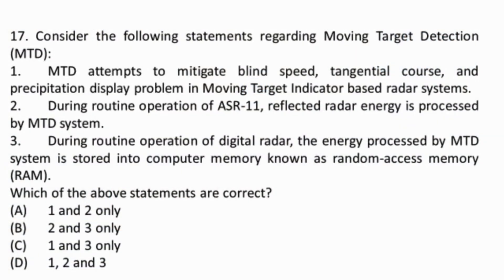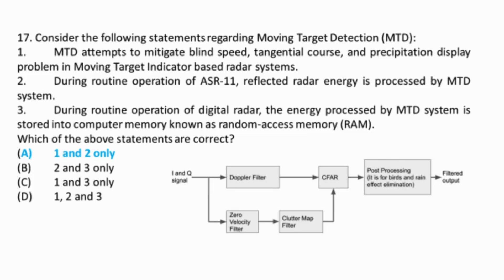Question 17: Moving target detection is important for removing clutter from the radar image. In ATC, the targets are moving, so the easiest approach is to eliminate all clutter which is static or which does not match the expected size or behavior of an aircraft. Moving target detection is an upgraded version of the moving target indication system. It is used to mitigate blind speed, tangential course, and precipitation display problems in moving target indicator-based radar systems. The ASR-11 radar has a digital moving target detection processor which uses Doppler radar and a clutter map, giving advanced ability to eliminate ground and weather clutter and track targets. It is theoretically capable of tracking a maximum of 700 aircraft simultaneously. Thus statements one and two are correct.